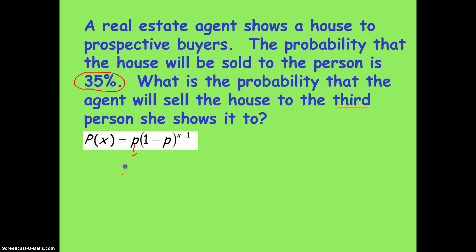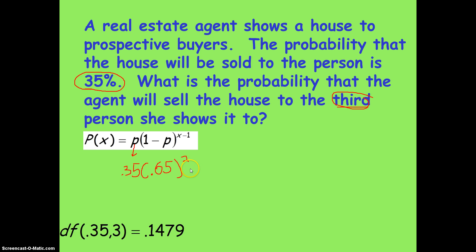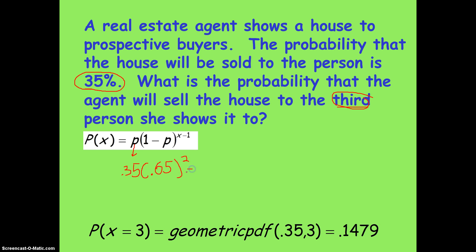Our p is going to be 0.35, and we're going to do 1 minus p, which is 0.65, raised to the power of our desired trial minus 1, which is 3 minus 1, which is 2. And what does that get us? That gets us 0.1479, and I wrote it down there nicely as well.